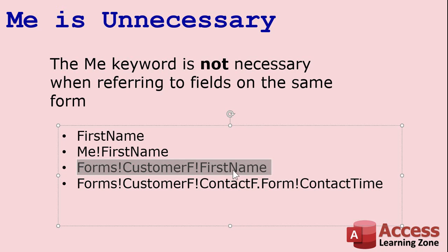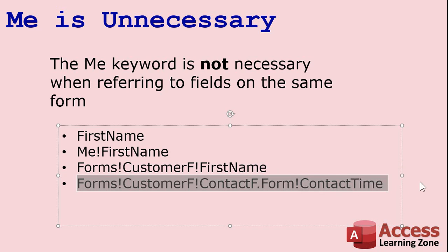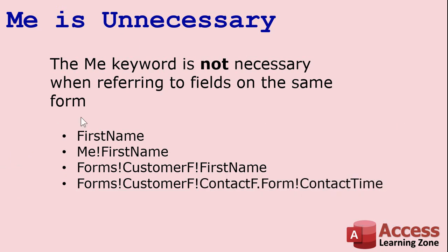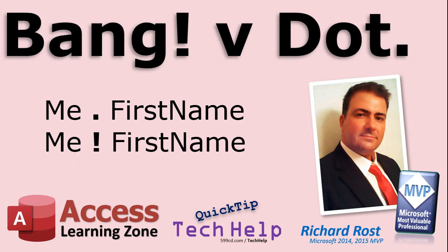If you want me.Caption, great — otherwise just leave it as the field name. If you're referring to something on a different form, there's the full notation. For a subform, another popular question: it's Forms!ParentFormName!SubFormControlName.Form!FieldName.